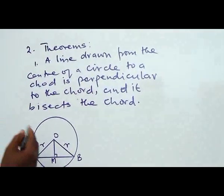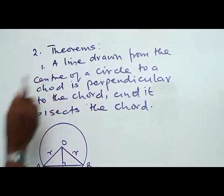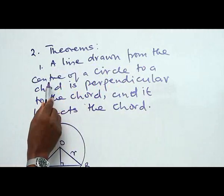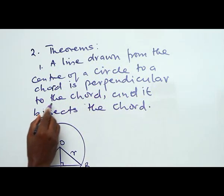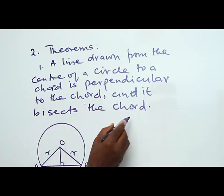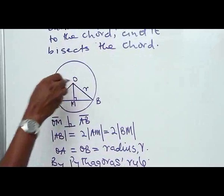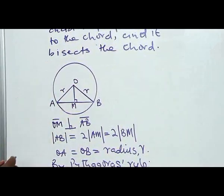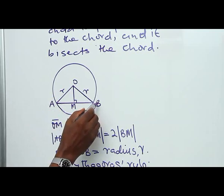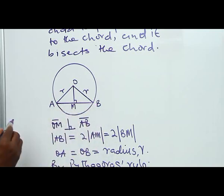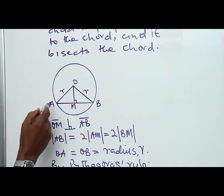We now proceed to look at some of the theorems of a circle — the theorems that we can use to solve problems. The first theorem: a line drawn from the center of a circle to a chord is perpendicular to the chord and it bisects the chord. What we are saying here is there is a circle and this is the center of the circle, represented by the point O. Now a line from the center of the circle to the chord AB bisects this chord AB — it divides it into two equal parts.